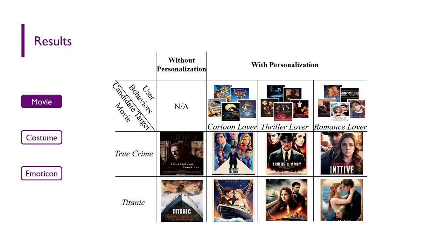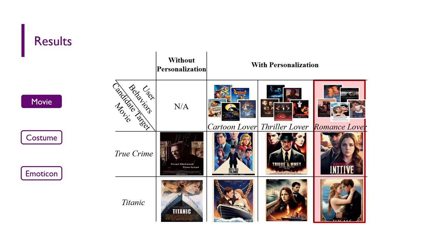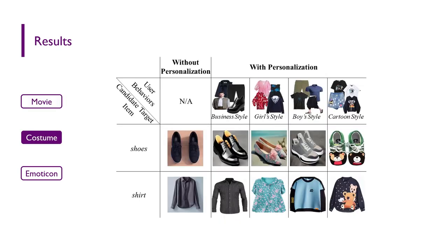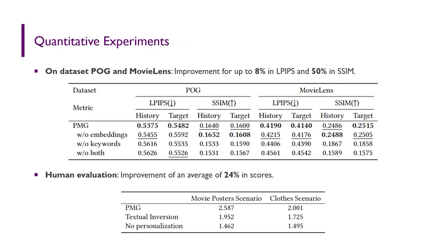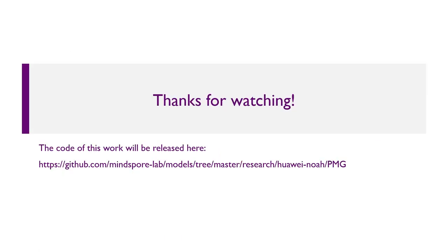In our experiments, we test the generation of PMG in three scenarios. When generating movie posters, PMG generates cute posters in cartoon style for cartoon lovers, posters with crime and disaster for thriller lovers, and posters of love for romance lovers. The results of costumes and emoticons also show the effectiveness of PMG. For quantitative experiments, we evaluated the generation effect on two datasets and invited volunteers to do human evaluation. The images generated by PMG achieve an improvement of up to 8% in LPIPS, 50% in SSM, and an average of 24% score. Thanks for watching.